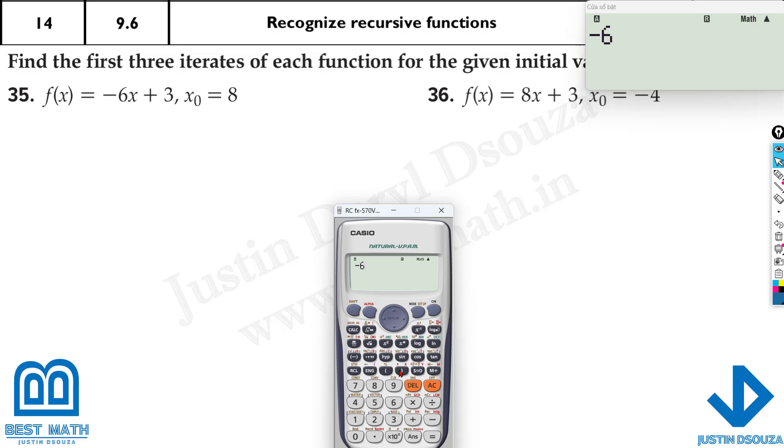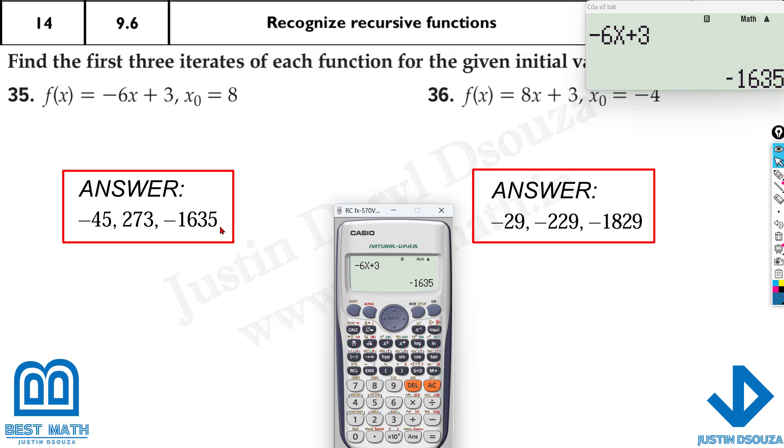Minus 6x plus 3, calculate it at 8, now that's minus 45, you can see the answer. But now calculate it again at minus 45, 273, calculate it at 273. And the last answer is minus 1635. Similarly, I'll solve all the problems, but you can try them out by yourself.